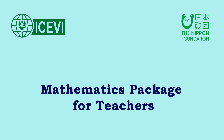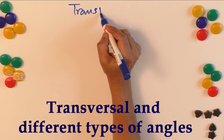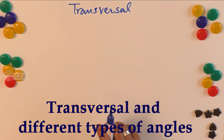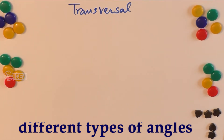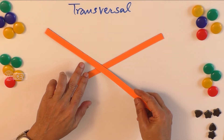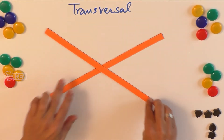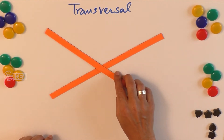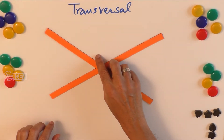This is the ICVI Nippon Foundation Mathematics Package for Teachers. The title of this video is 'Transversal and the Different Types of Angles.' We know that when two lines intersect each other, we get angles.